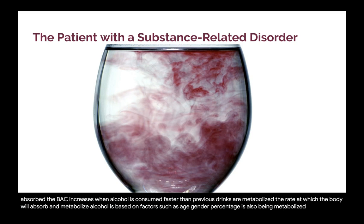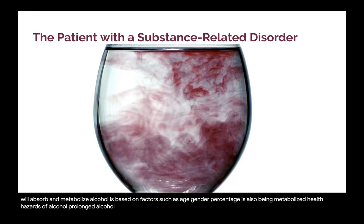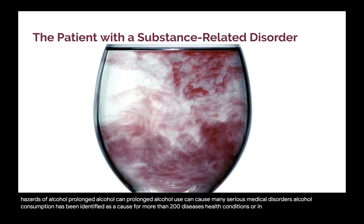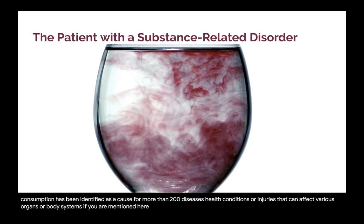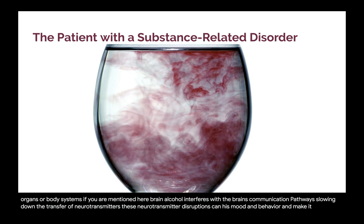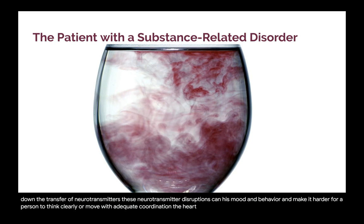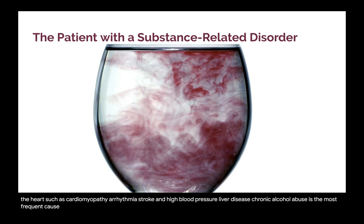Health hazards of alcohol: prolonged alcohol use can cause many serious medical disorders. Alcohol consumption has been identified as a cause for more than 200 diseases, health conditions, or injuries affecting various organs or body systems. Brain: alcohol interferes with the brain's communication pathways, slowing down the transfer of neurotransmitters, which can change mood and behavior and make it harder to think clearly or move with adequate coordination. The heart: drinking excessively for a long period leads to damage such as cardiomyopathy, arrhythmia, stroke, and high blood pressure. Liver disease: chronic alcohol abuse is the most frequent cause of morbidity and mortality from liver diseases.